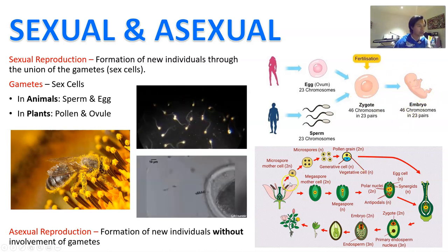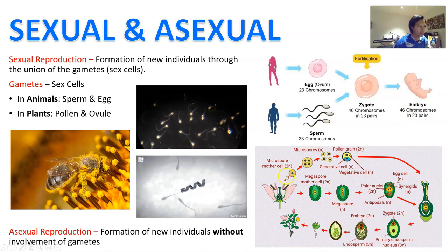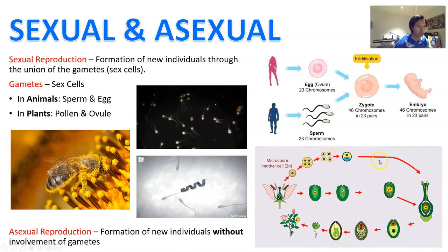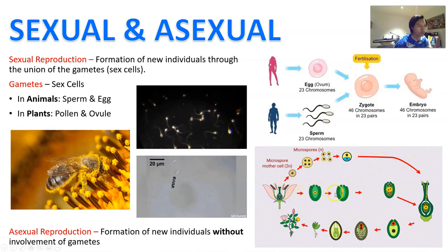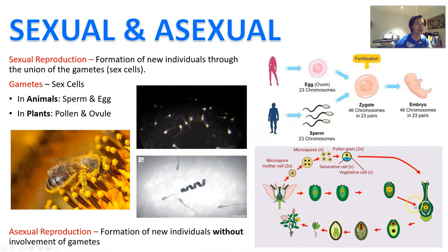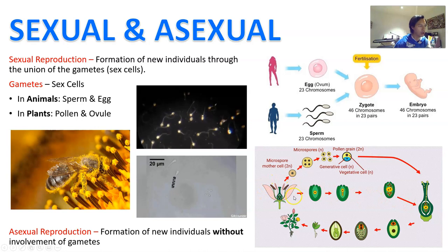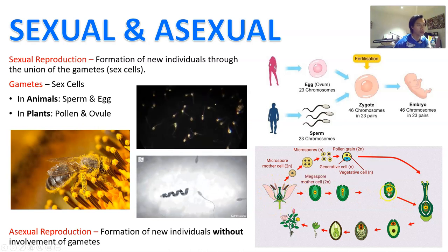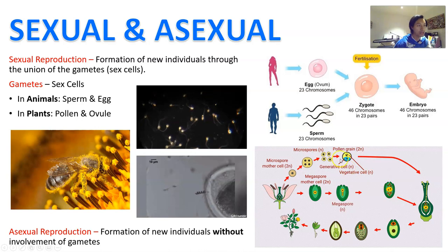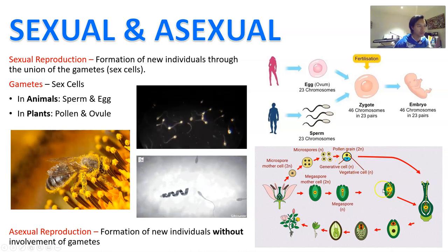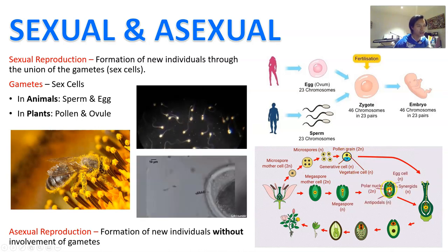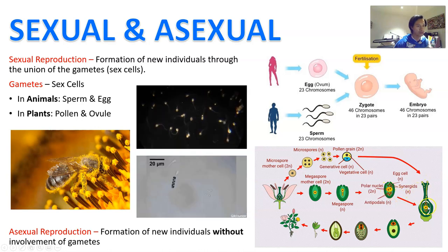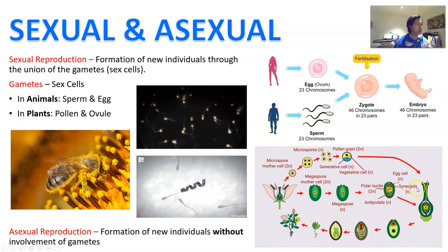In plants, you can have the same thing, except instead of sperm and egg, you have pollen and then the ovule. Both of them are actually on the flower of the plant, the flower being the sexual reproductive organ of the plant. When the pollen of one flower meets the ovule of another flower at the base of the flower stem, that forms a new seed, which then forms a new plant.